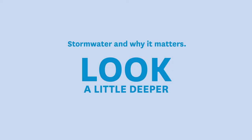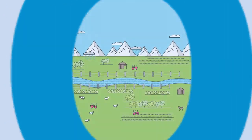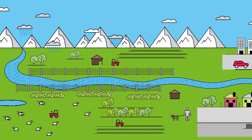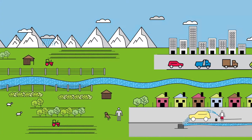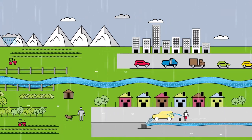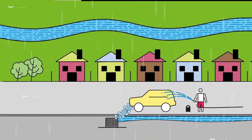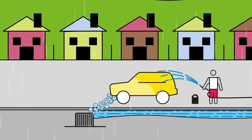Let's look a little deeper into stormwater and why it matters. Stormwater is the water that flows from pavements and roads down drains directly into our streams and rivers. It can come from rain or from when we use water outside to do things like wash the car.